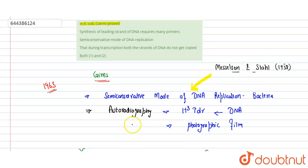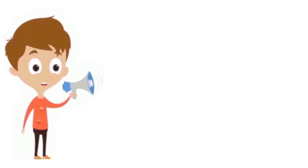Here we will see the options. Option A: synthesis of leading strand of DNA requires many primers - this is incorrect. This statement is incorrect. Leading strand never requires many primers, only lagging strand requires. Semi-conservative mode of DNA replication - correct. During replication, both strands of DNA don't get copied - this is incorrect. Both 1 and 2 - incorrect. Option B is correct.